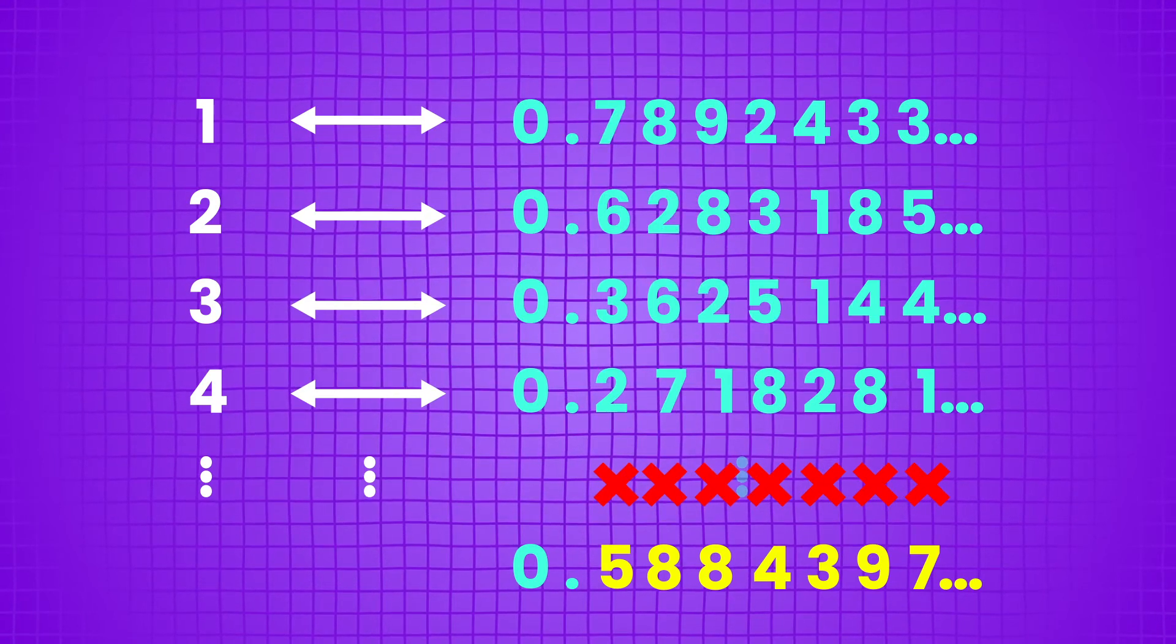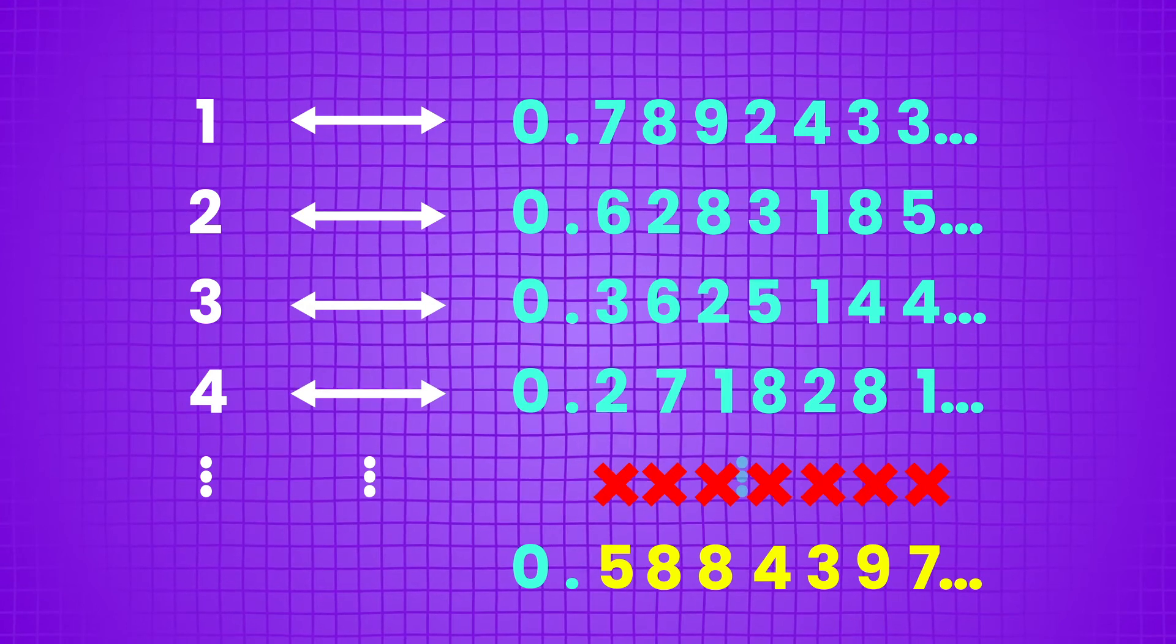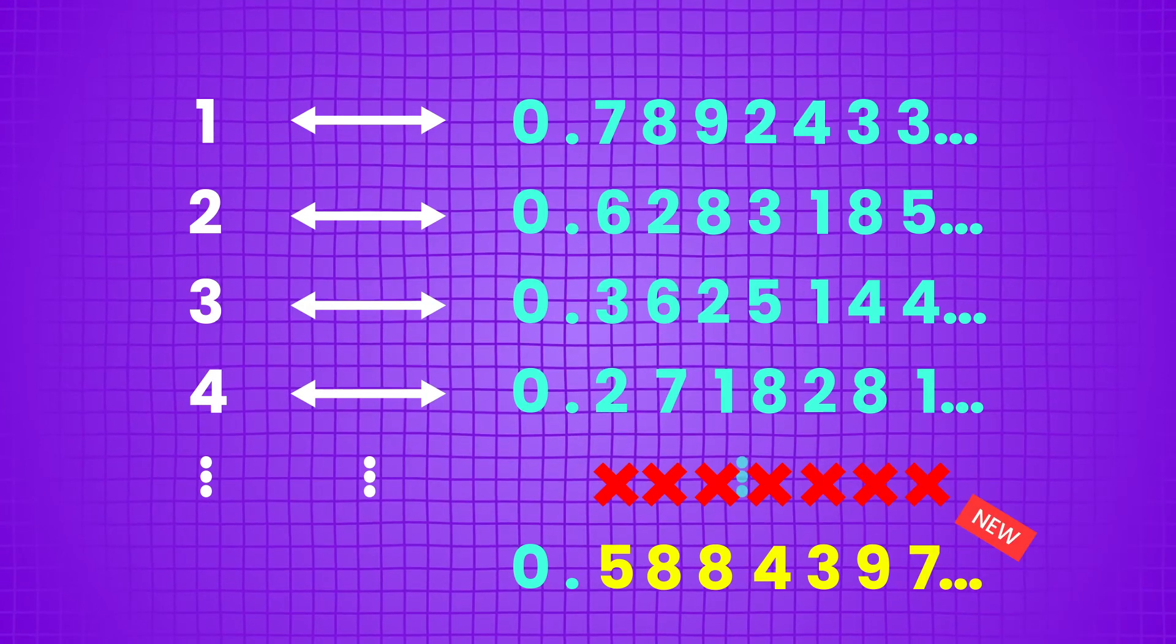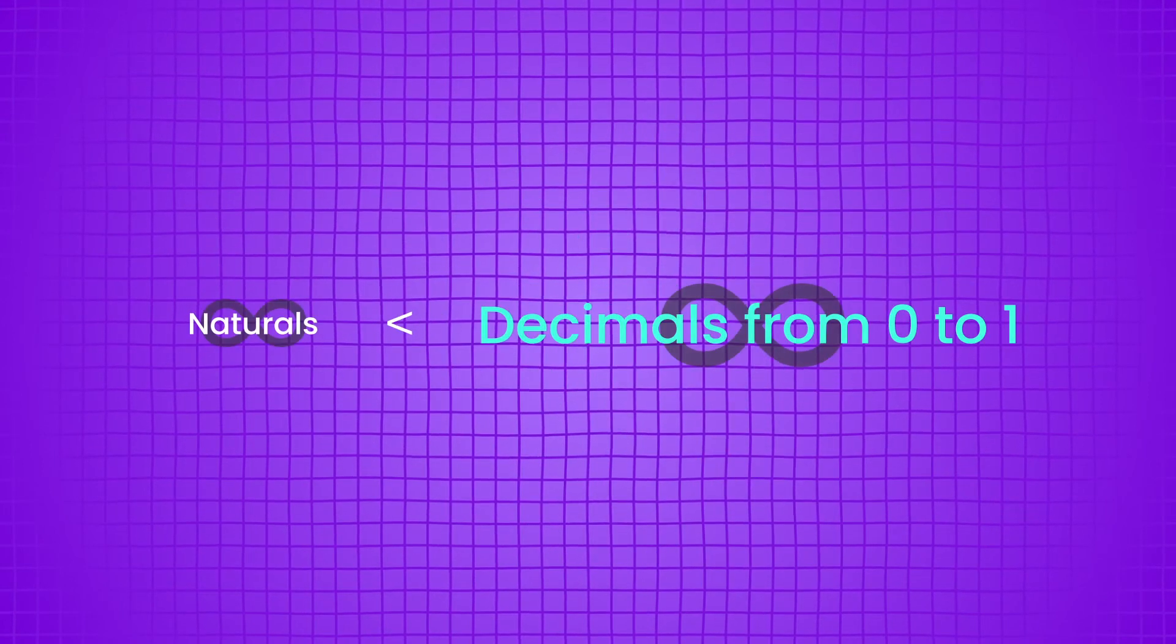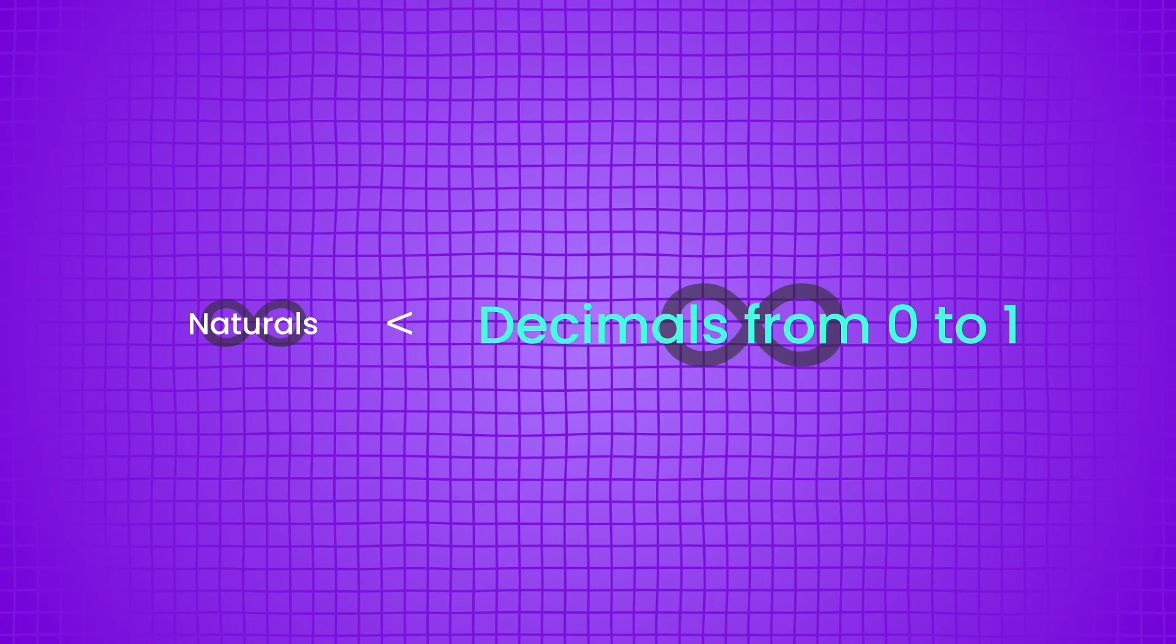It disagrees with all the numbers on your list in at least one place, so it can't be on your list. That means it's unpaired, so the infinity of decimals between zero and one is greater than the infinity of all the naturals. Some infinities really are bigger than other infinities.